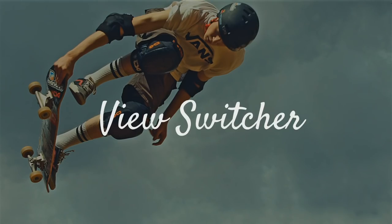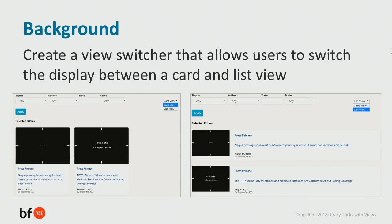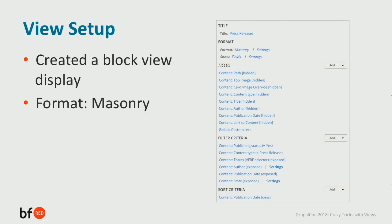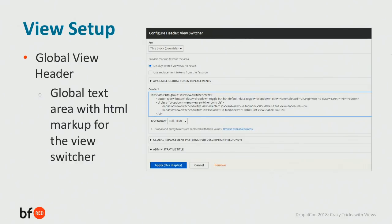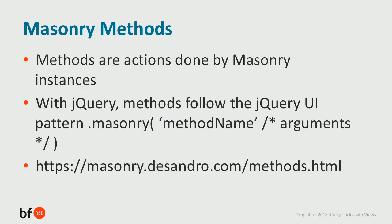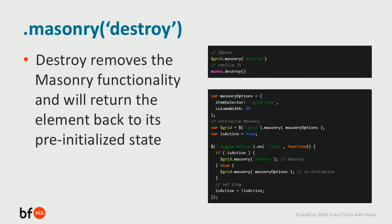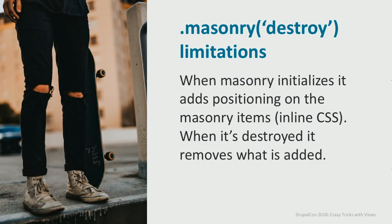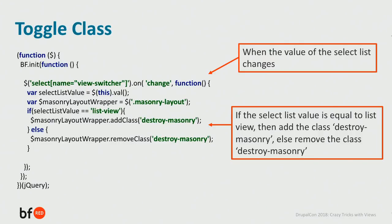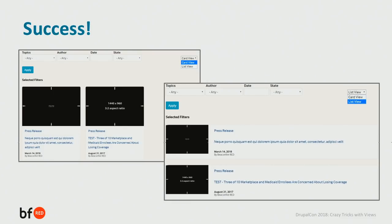Next I'll discuss how we created a view switcher — basically we wanted users to be able to switch the display between a card and list view. We created a block view display with the masonry format, and in the global view header area we added a text area with HTML markup for the view switcher. We initially considered using masonry methods — there's a destroy method that removes masonry functionality and returns the element to its pre-initialized state — but we ended up not going with that approach. Regardless of what it does, we needed to toggle a class because we're going to style those displays differently, so we used JavaScript to add and remove a class.